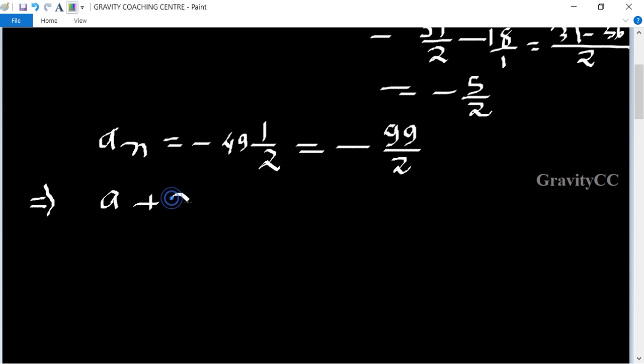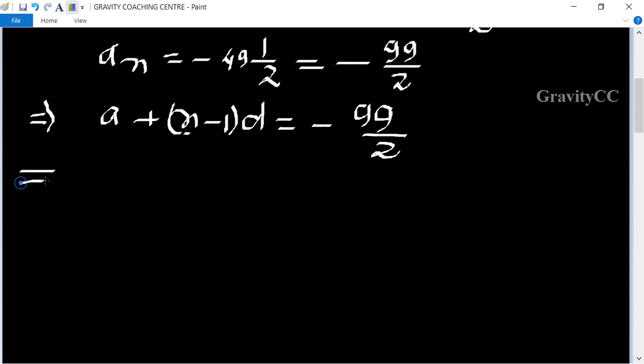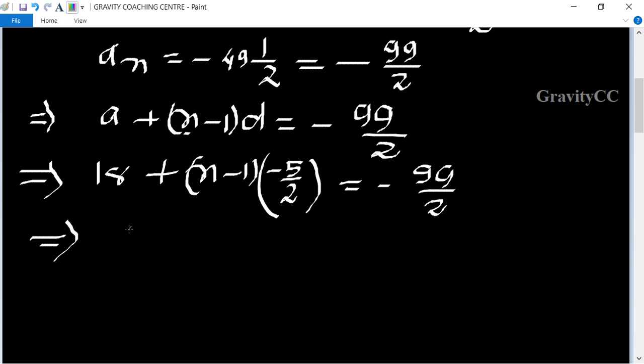(n minus 1)d equals minus 99 upon 2. This implies that the value of a equals 18 plus... a equals 18 plus (n minus 1) times minus 5/2 equals minus 99 upon 2, implies that